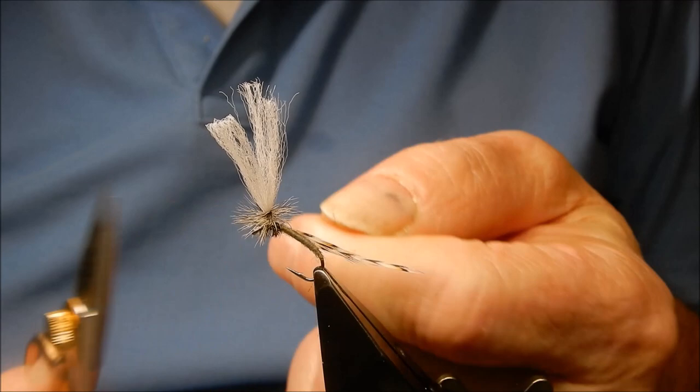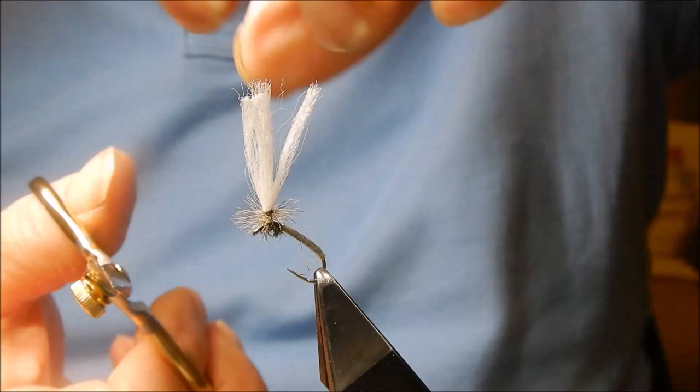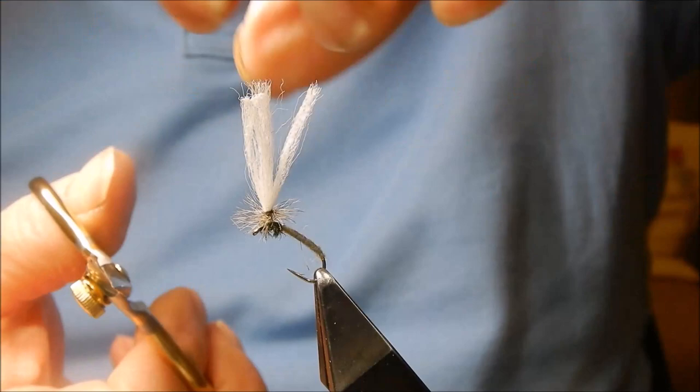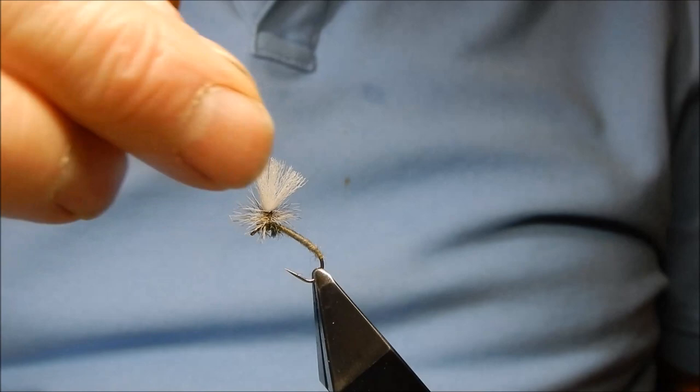Just tilt the vise towards you. Snip the hackle tip off. If you get any errant fibers, you don't want any fibers under the hook. Snip that off. The post, probably length of the hook. You're better off leaving it long. You can always trim it when you're on the water.